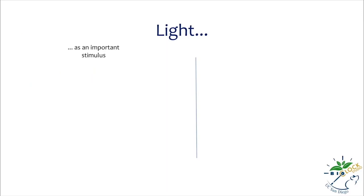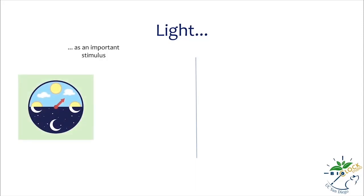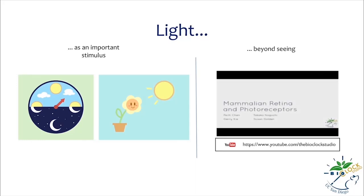Light is an important environmental stimulus on Earth, and many organisms use light for more than just seeing. For example, many organisms use light to indicate time of day, and some plants use light to guide direction of growth. This tutorial explains how we can study the effects of light beyond seeing, specifically focusing on non-image-forming vision. To learn more about the differences between image-forming and non-image-forming vision, watch the Bioclock Studios tutorial on the mammalian retina and photoreceptors.